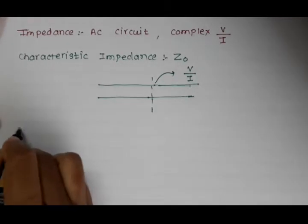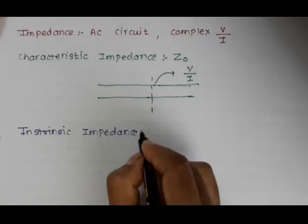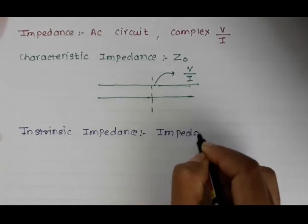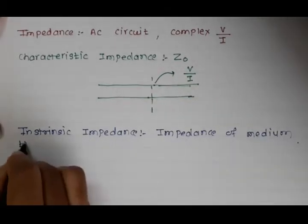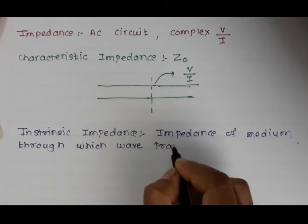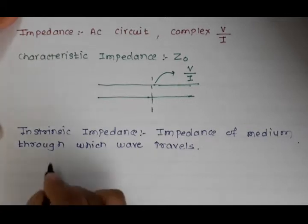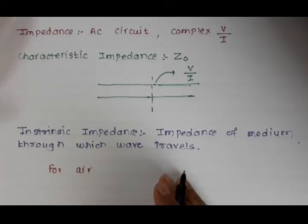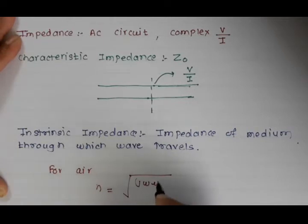The next one is the intrinsic impedance. Whenever we talk about the intrinsic impedance, it is nothing but the impedance of the medium through which the wave travels. Here we are assuming that our medium of transmission is air. For air, we can calculate the intrinsic impedance as the ratio of j·omega·mu divided by (sigma + j·omega·epsilon).